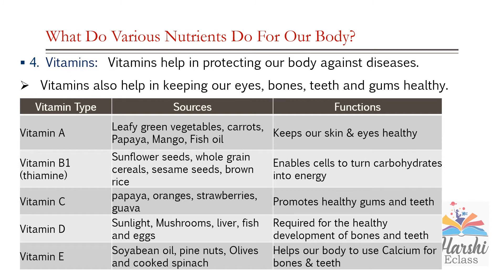Vitamins help in protecting our body against diseases. Not only vitamins — minerals also do the same. That's why vitamins and minerals together are called protective nutrients. Vitamins also help in keeping our eyes, bones, teeth, and gums healthy. There is vitamin A, vitamin C, vitamin D, vitamin E, and vitamin K, along with a group of vitamins called vitamin B complex. Vitamin A is rich in leafy green vegetables, carrots, papaya, mango, and fish oil. Vitamin A keeps our skin and eyes healthy.